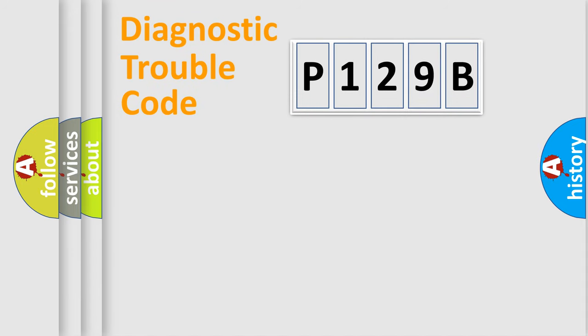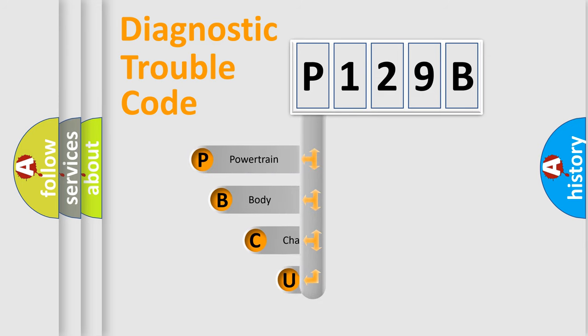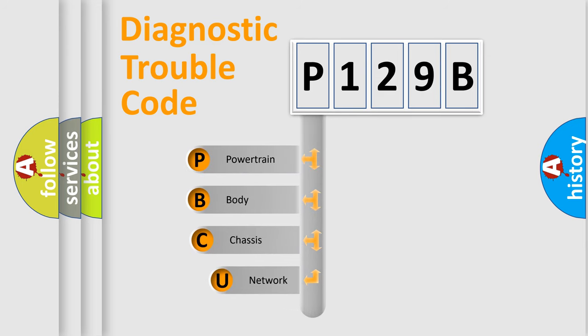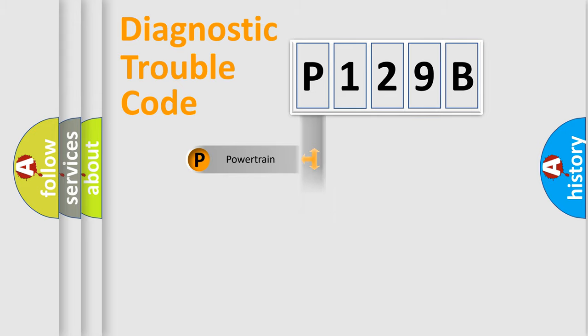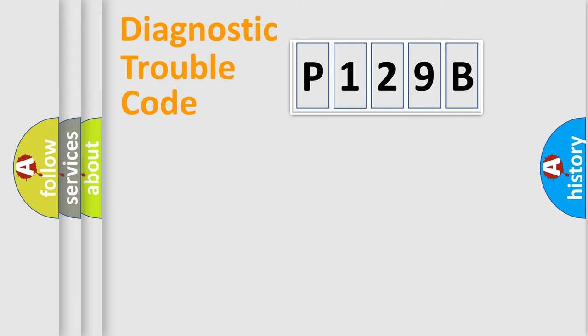Let's do this. First, let's look at the history of diagnostic fault code composition according to the OBD2 protocol, which is unified for all automakers since 2000. We divide the electric system of automobile into the four basic units: Powertrain, Body, Chassis, Network.